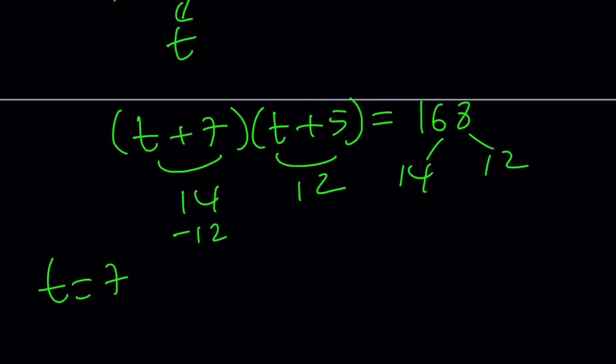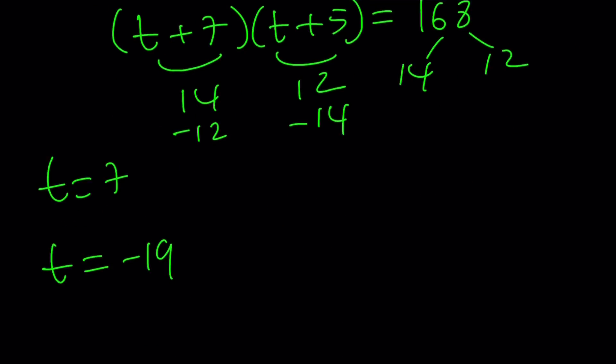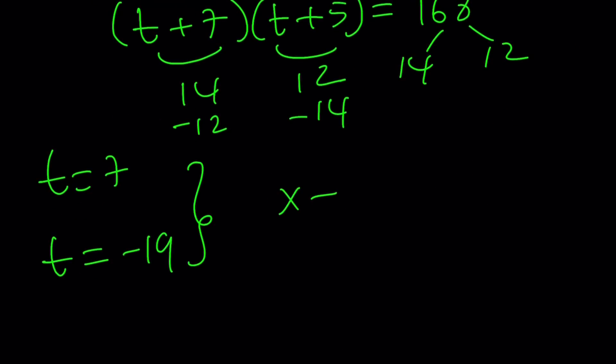But there's another value. If this is negative 12, this is going to be negative 14 because they're two apart. And from here, I get t equals negative 19. But what is t? t is x plus 6 over x. x plus 6 over x is equal to 7. This should give you x equals 1. That's one of the solutions. What about the other solution? Let's find out.